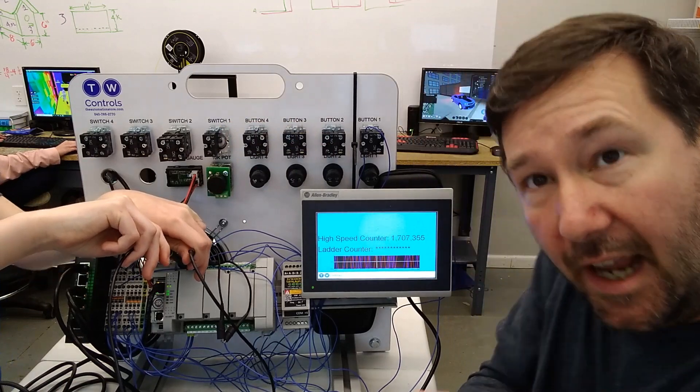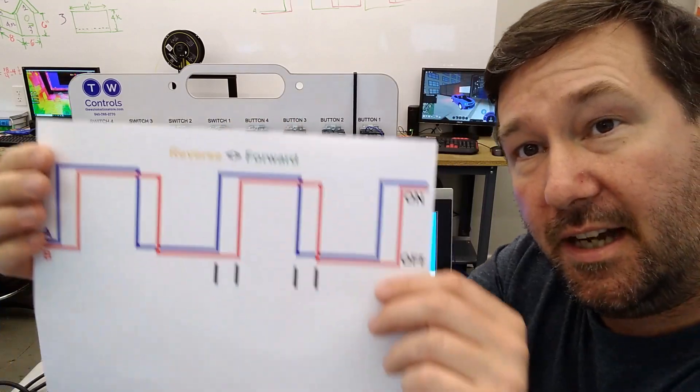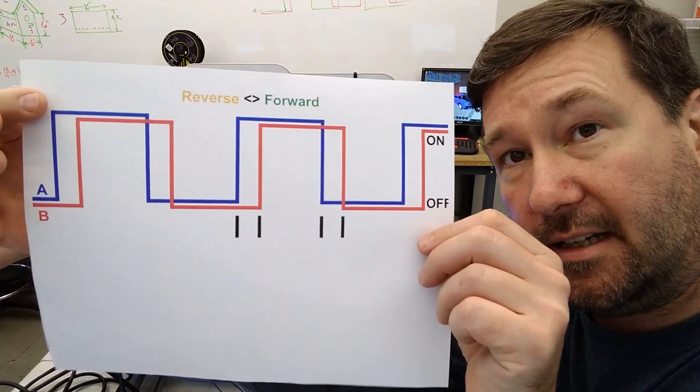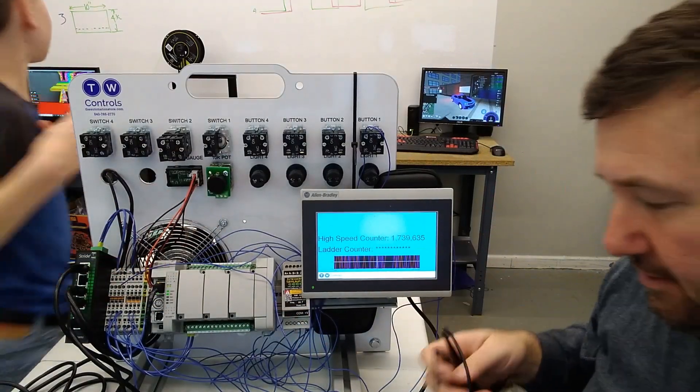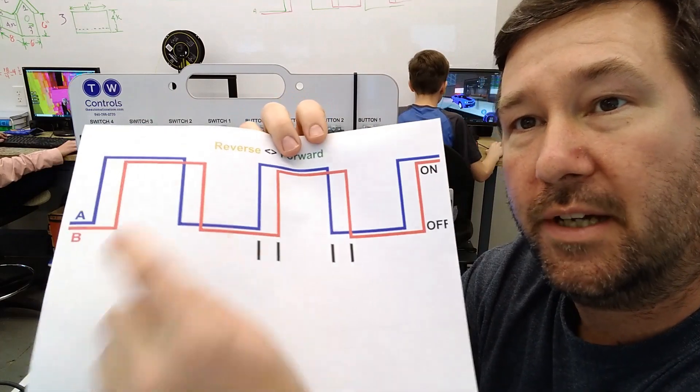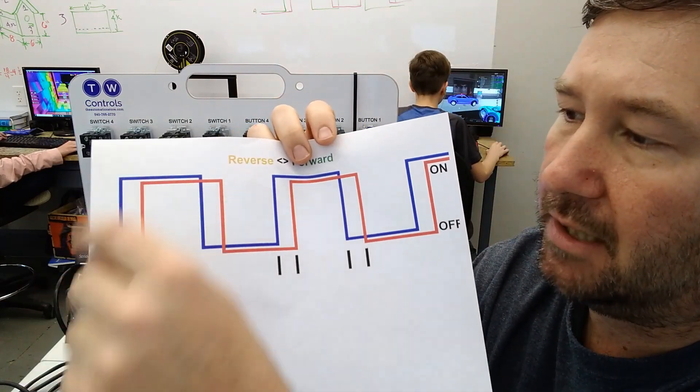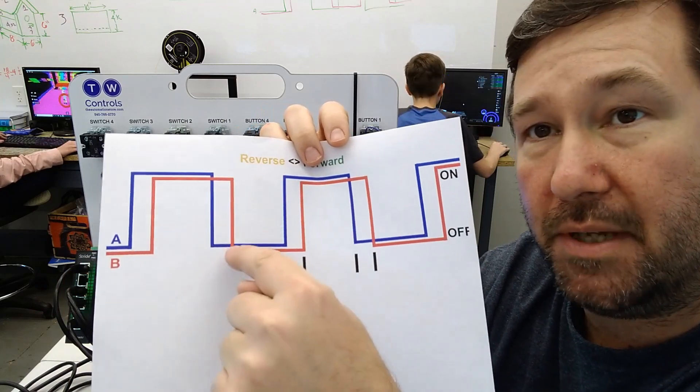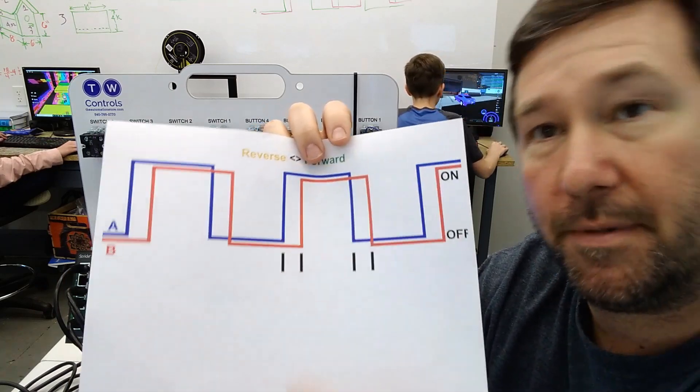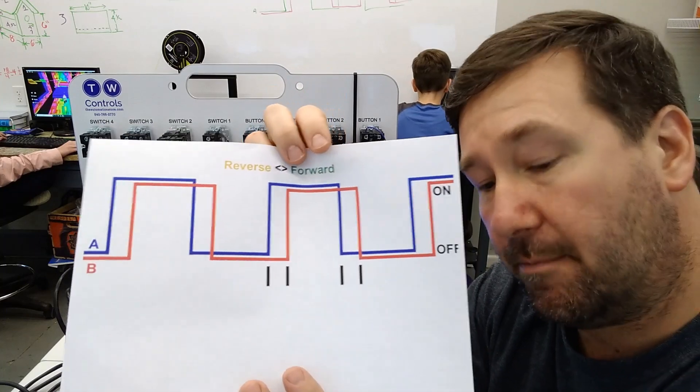And so Michael doesn't have to hold this the entire time, I've made this handy graph to use the rest of the video. Thank you very much, Michael. So this is what you were seeing on the scope is A would come up and then B would come up and then A would go down and then B would go down and then they would go up again in this square wave pattern.